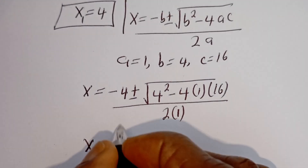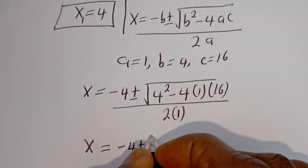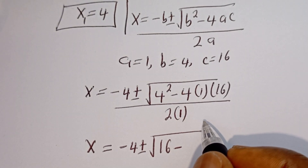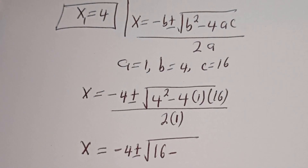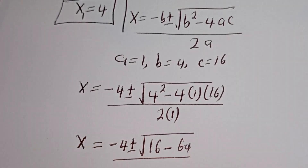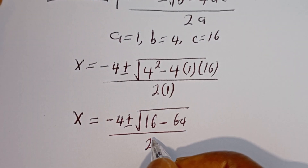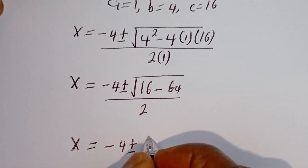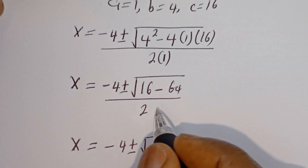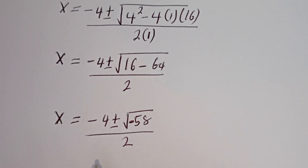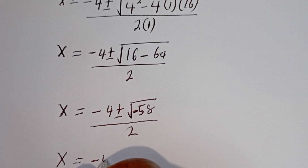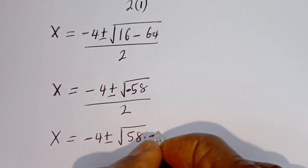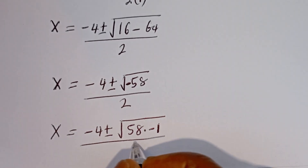Then s is equal to minus 4 plus or minus square root of 4 squared — that is 16 — minus 4 times 1 times 16, that is 64, over 2. So we have s equal to minus 4 plus or minus square root of 16 minus 64, which gives minus 48 under the root, over 2. That is minus 58 over 2.